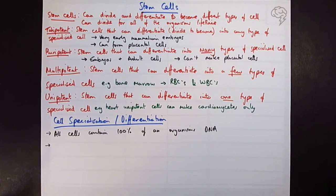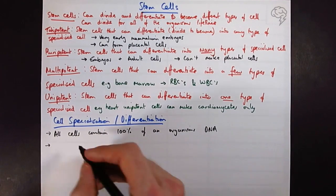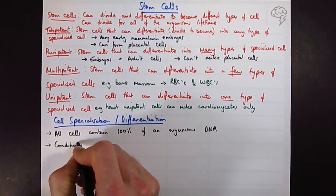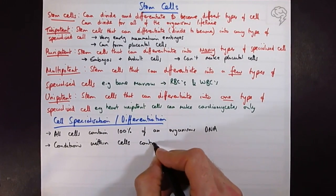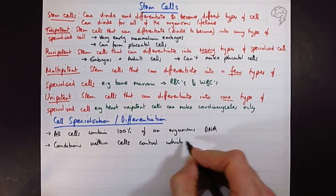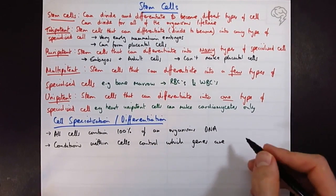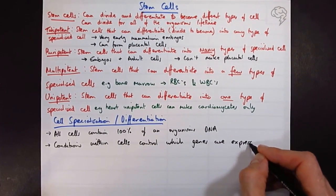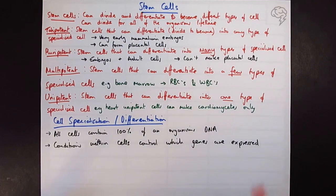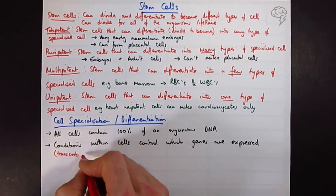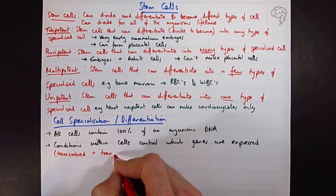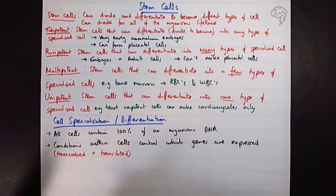So why don't they? Why can't they do this? Well, the conditions within cells are going to control which genes are turned on or expressed and which genes aren't. And when we say expressed, really we mean sort of transcribed and translated into proteins.